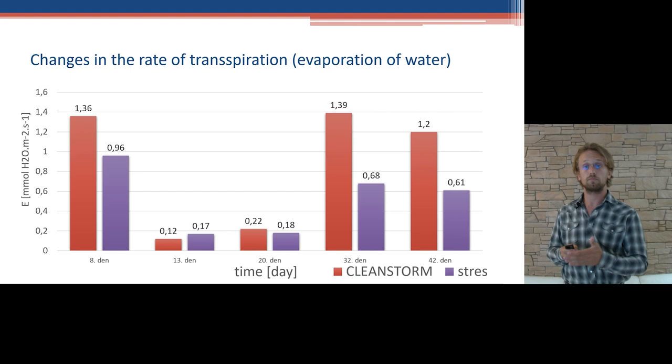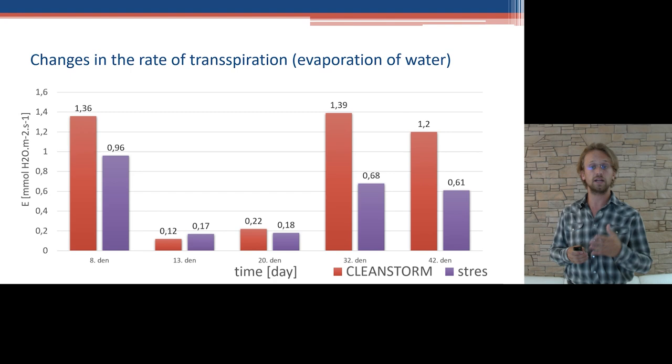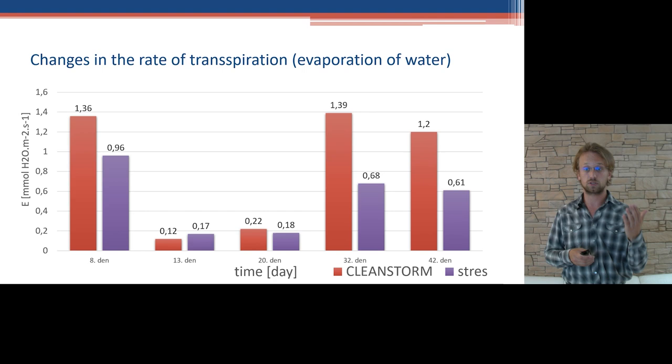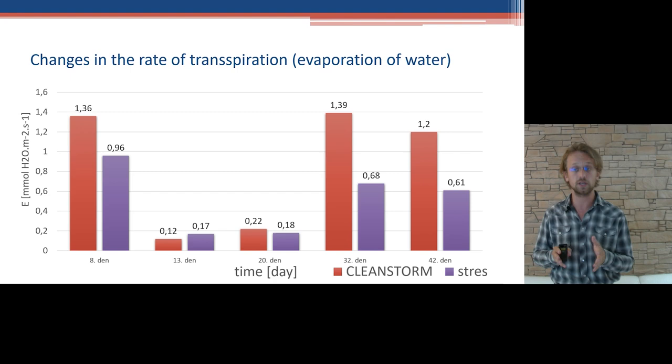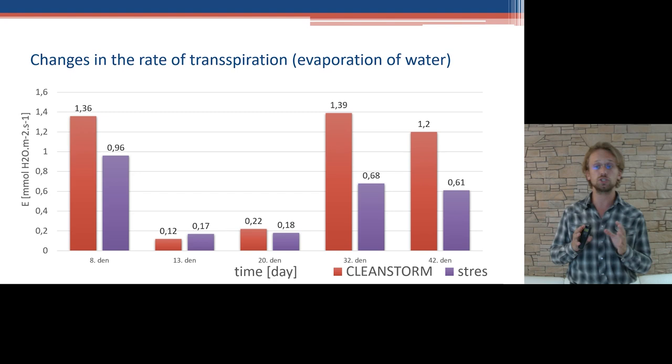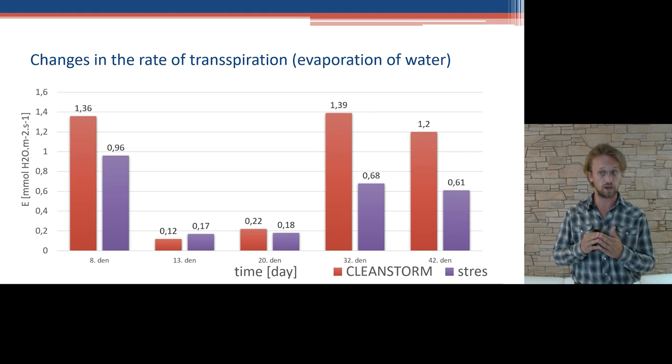This information is confirmed by the other part of the graph, where we have changes in the rate of transpiration. Important is the first days of stress. In the graph it is named as the eighth day, because we induced the hydric stress on the eighth day and that was when we started measuring. You can see a sample stimulated with CleanStorm and a sample without treatment. Both columns represent plants that have been affected by hydric stress. In the first phase, the plants that saved water are still cooling here, then the vents got closed and those plants save water as long as they can. Probably, and this is how we interpret it, the purple column doesn't represent saving of water, but simply there was no more water.